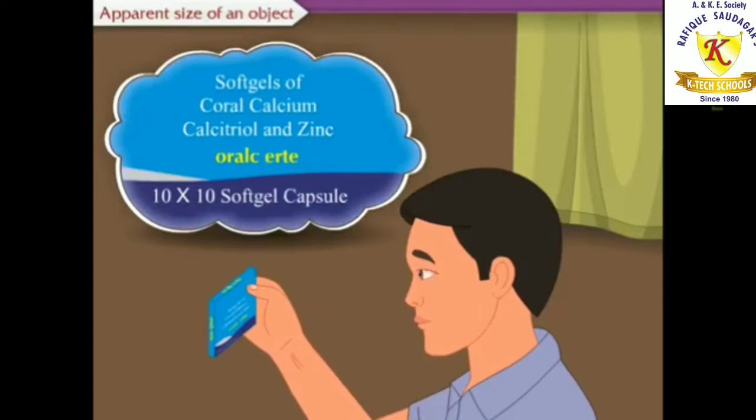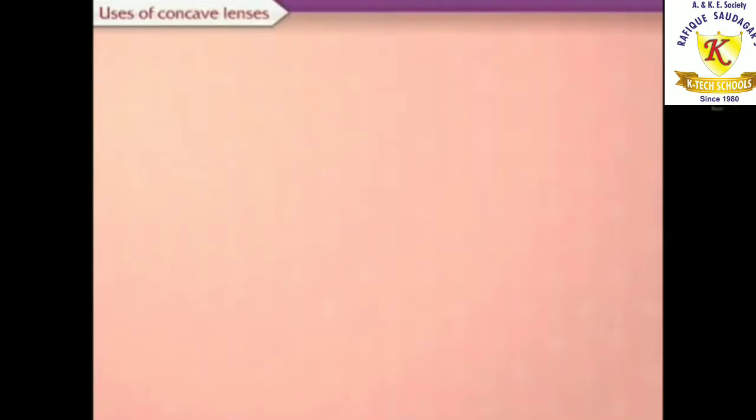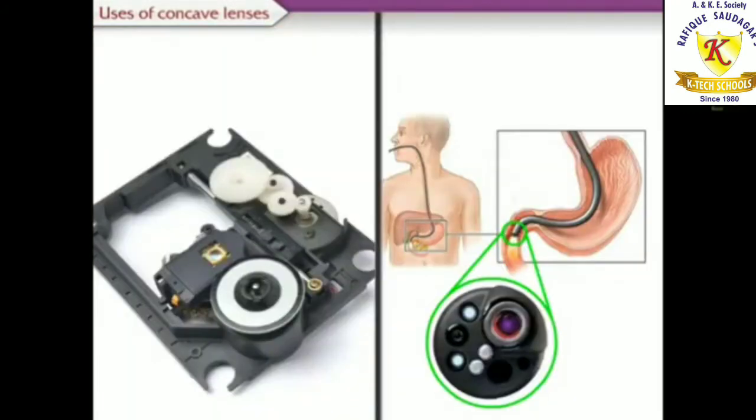In short, an object can be clearly seen in its most magnified form when it is at the distance of distinct vision from the eye. Now let's learn uses of concave lenses.